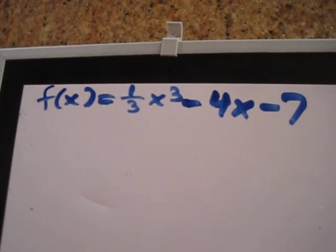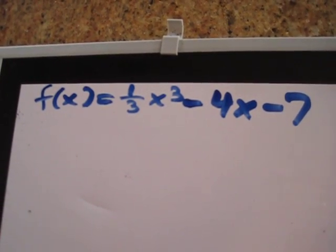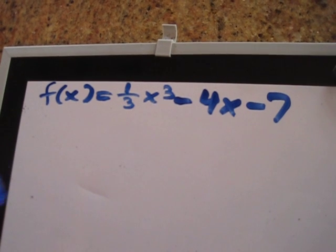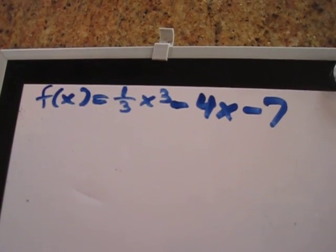We are going to use the first derivative test to find the local extrema of f(x) equals one-third x cubed minus 4x minus 7.